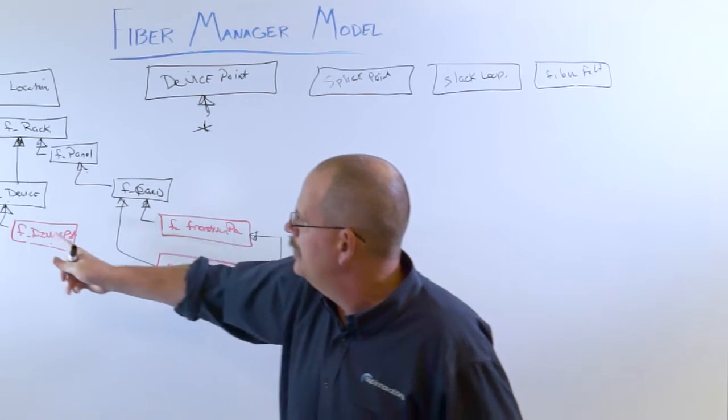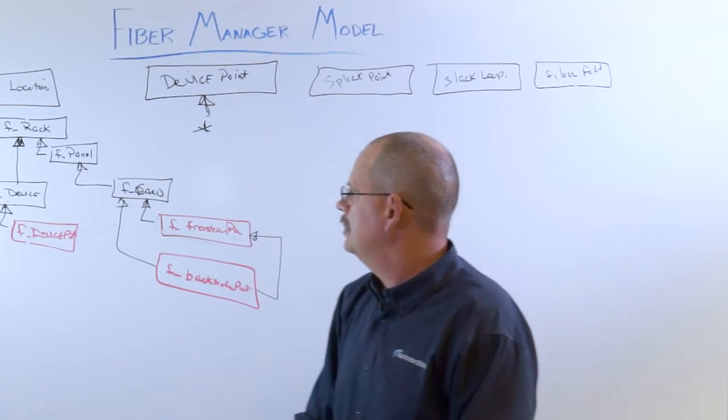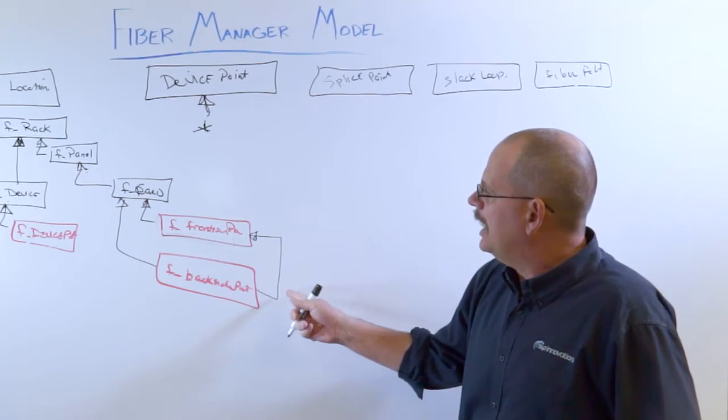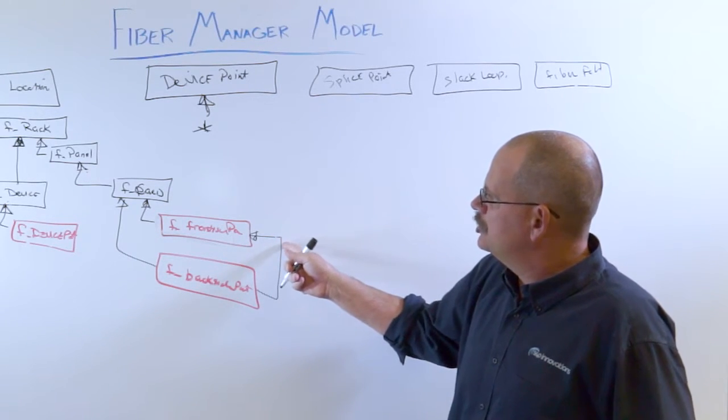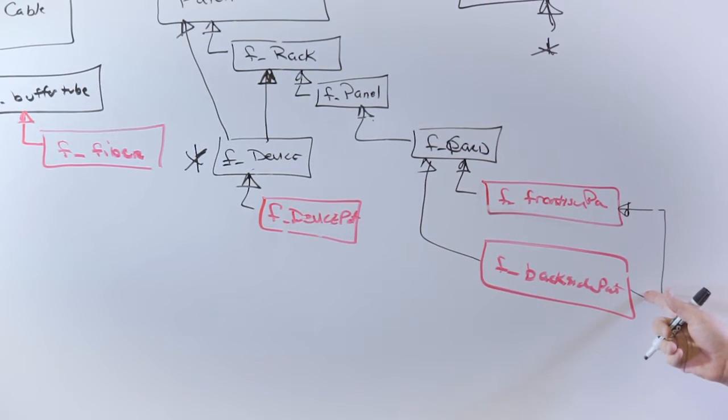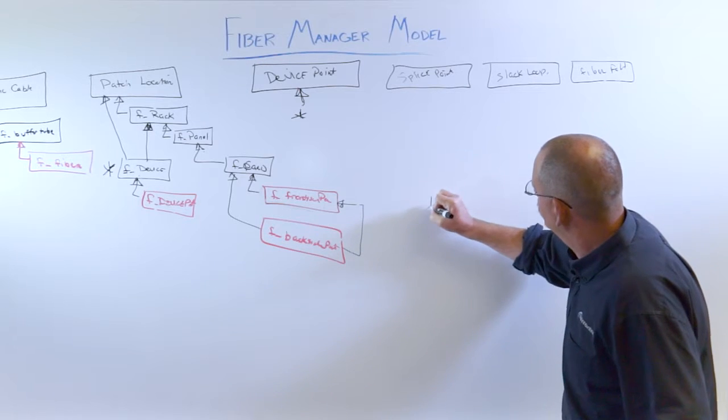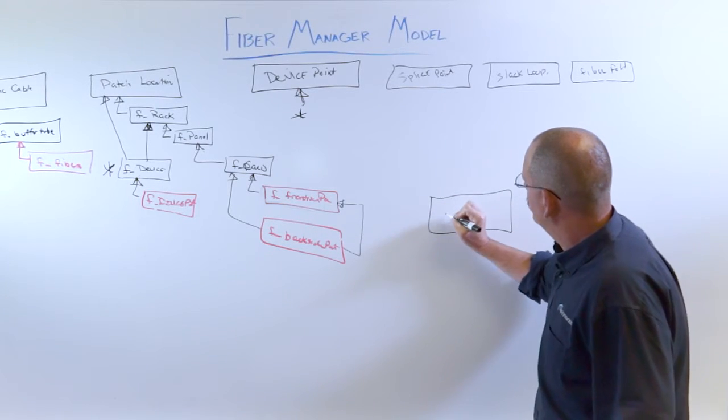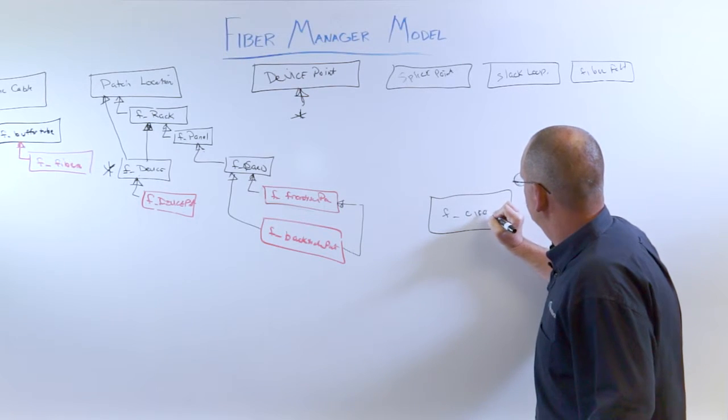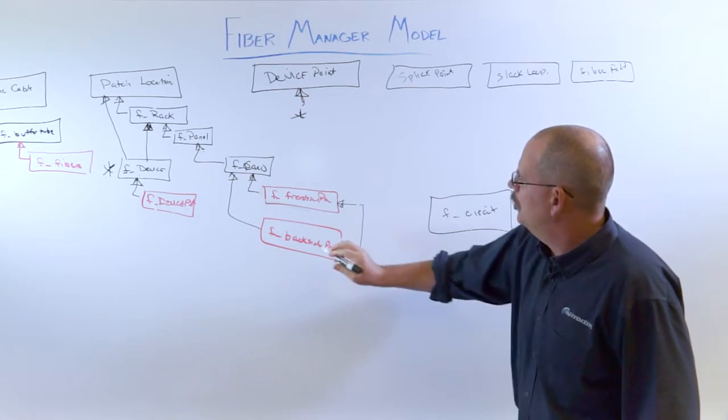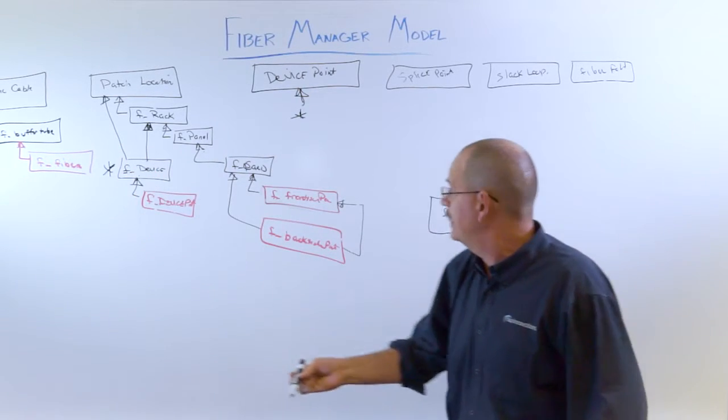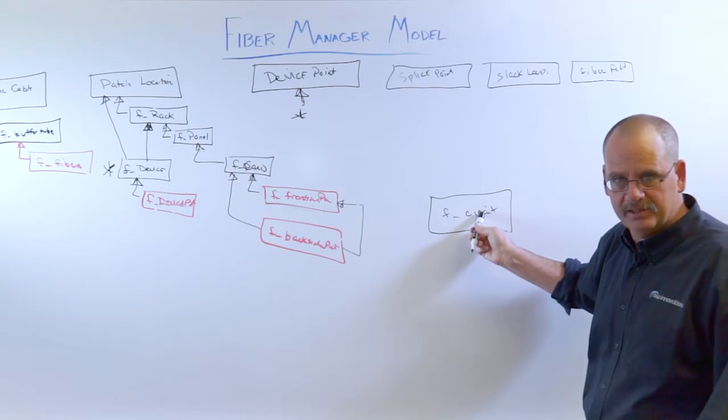Now, why did I show these objects in red? These are objects that we can show will convey light or using circuit. So there is another table over here called F underscore circuit.